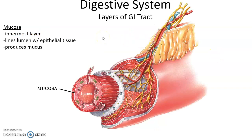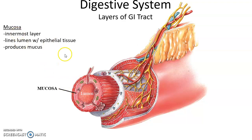The tube of the gastrointestinal tract has four layers. The deepest layer is the mucosa, which surrounds the lumen — the space within the tube where the bolus of food travels. The mucosa is lined with epithelial tissue, and it produces mucus to act as a lubricant, helping move the food along and preventing it from sticking to the walls of the gastrointestinal tract.